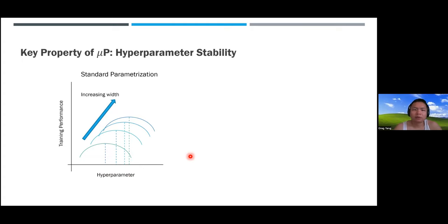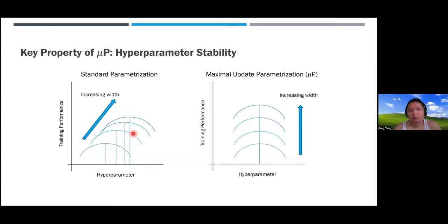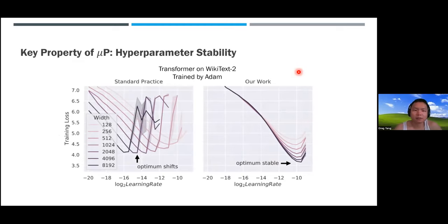As a positive example of hyperparameter stability, with MuP the hyperparameters are stable as you increase model width, and the curves don't intersect—meaning when you increase width you always do better. In reality on Transformer-XL trained with Adam, plotting training loss versus learning rate, larger models prefer smaller learning rates with standard parameterization. If you take the best learning rate for the smallest model and apply it to the largest, you'll have a very bad time.